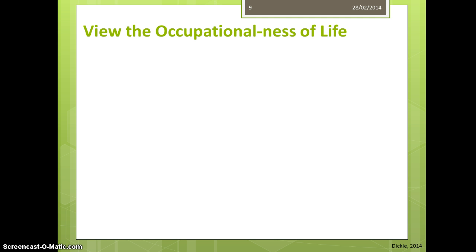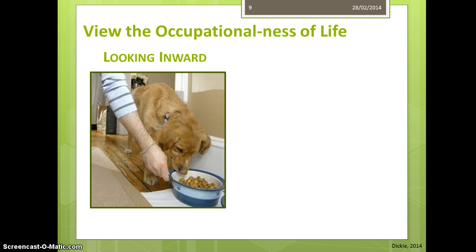In the first chapters assigned for this week, you can read about the 'occupationalness of life' and being a connoisseur of occupation — looking inward. The example given is about gardening. I'd like you to ponder an occupation you engage in similarly. For instance, caring for a pet might have gone from pleasure to chore to pleasure — like my niece and nephew who love their puppy but groan when asked to care for her, because it feels like a chore.